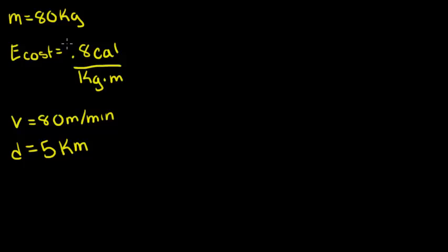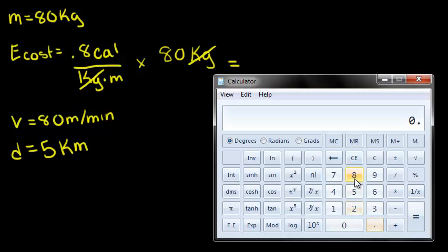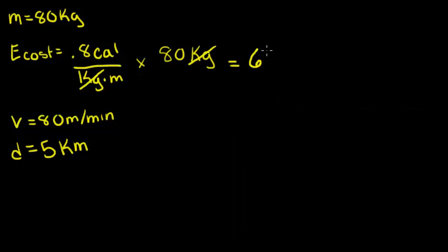We'll multiply this energetic cost by his mass. The kilograms will cancel out in this equation. Plugging this into our calculator gives us 64 calories per meter.